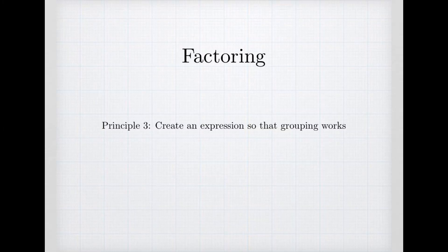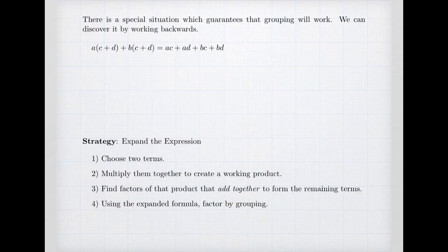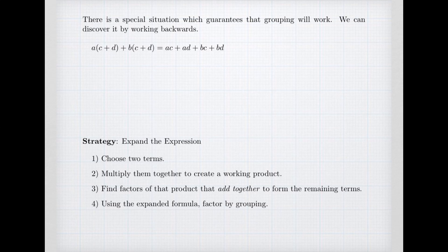We finish our series about factoring by considering principle number three. If you can't group, create an expression so that grouping works. We're going to be looking at some formulas where grouping is not obvious. Maybe there's not enough terms to be able to group, maybe we have the wrong number of terms. So what we want to do is look at grouping in a new way and discover something. It turns out there's a special situation that guarantees grouping will work. If I look at how grouping occurred, maybe we can discover what that is.